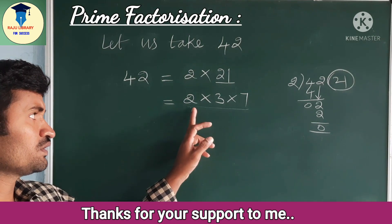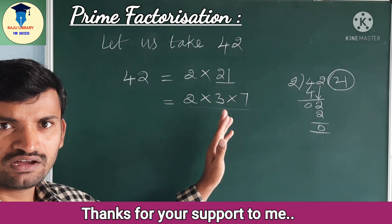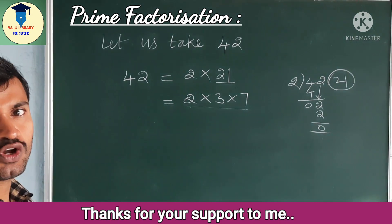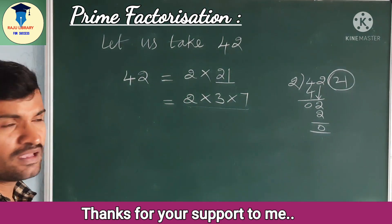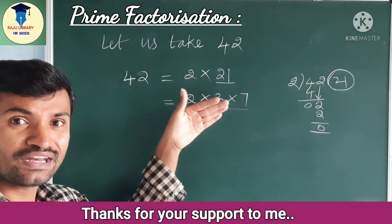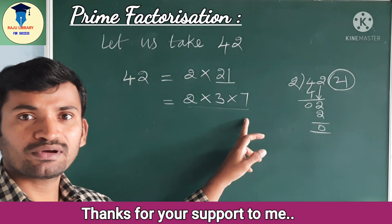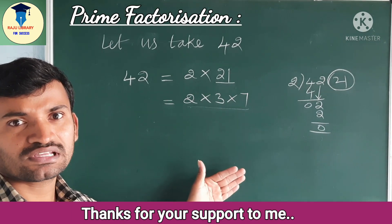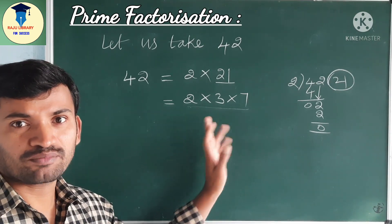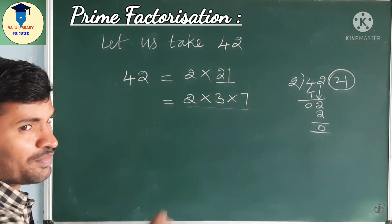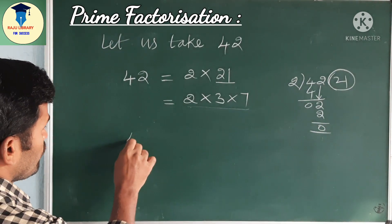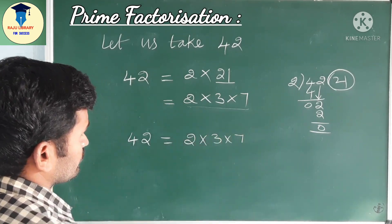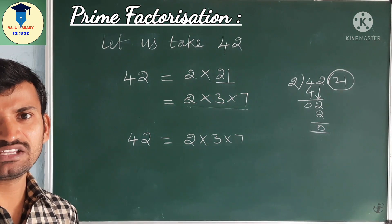Now observe all those numbers: 2 is there, 3 is there, 7 is there. We know prime numbers — 2 is a prime number, 3 is a prime number, 7 is a prime number. So we can stop there. If any composite number is there, we have to continue that process until getting all prime numbers. So therefore 42 = 2 × 3 × 7. This is the method of prime factorization.